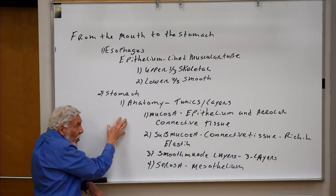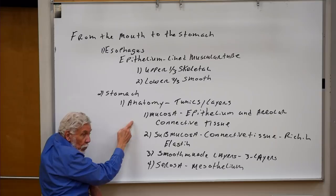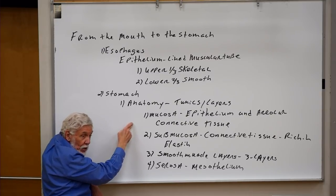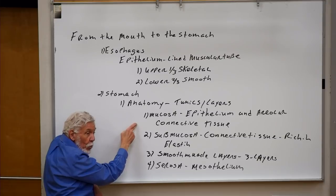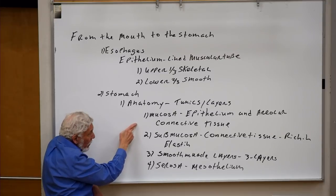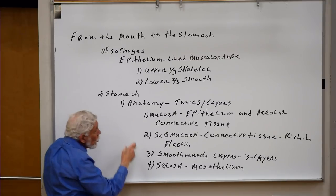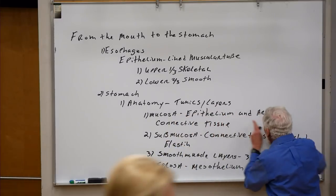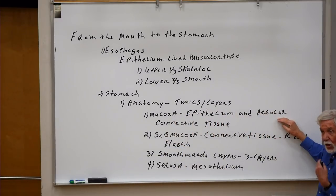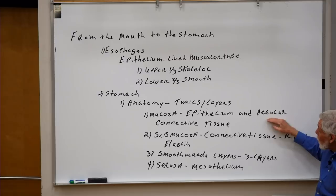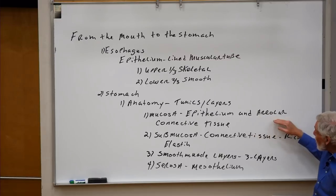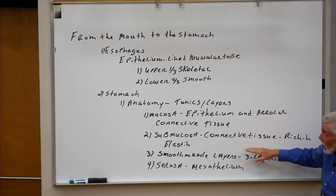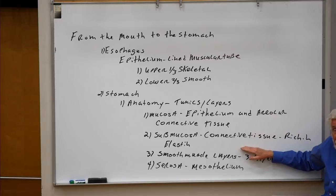The layers start with the mucosa, which is made of epithelial cells and forms the innermost layer lining the lumen of the stomach. The mucosa includes not only the epithelial cells but an underlying loosely connected connective tissue layer called areolar connective tissue, and there will be some blood vessels in this. Beyond the areolar connective tissue is the submucosa.